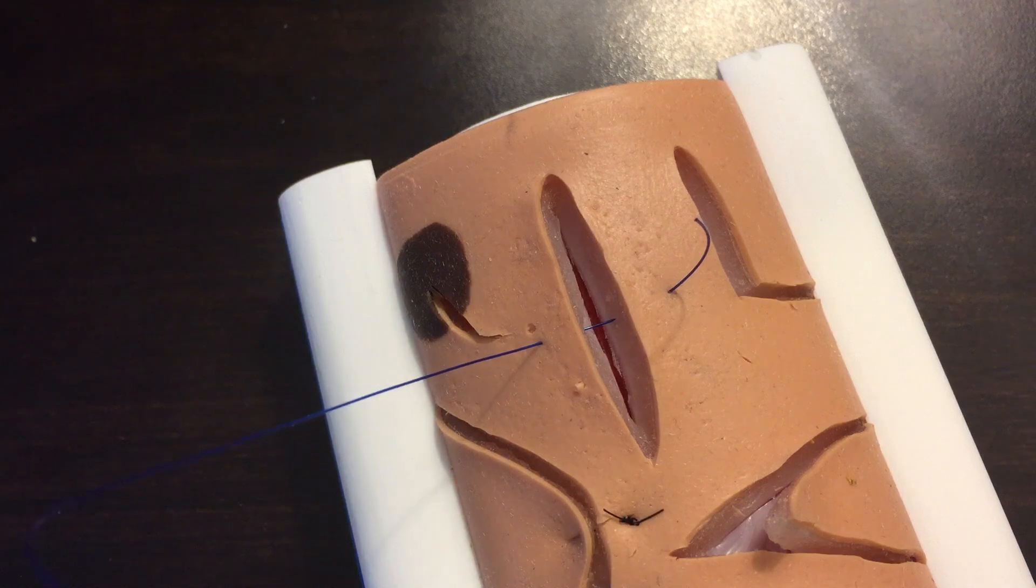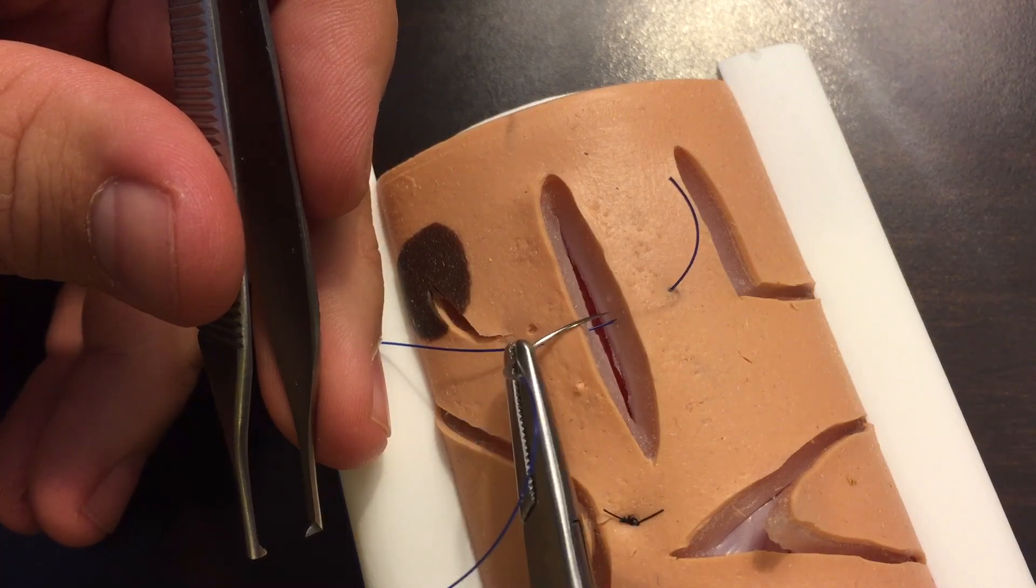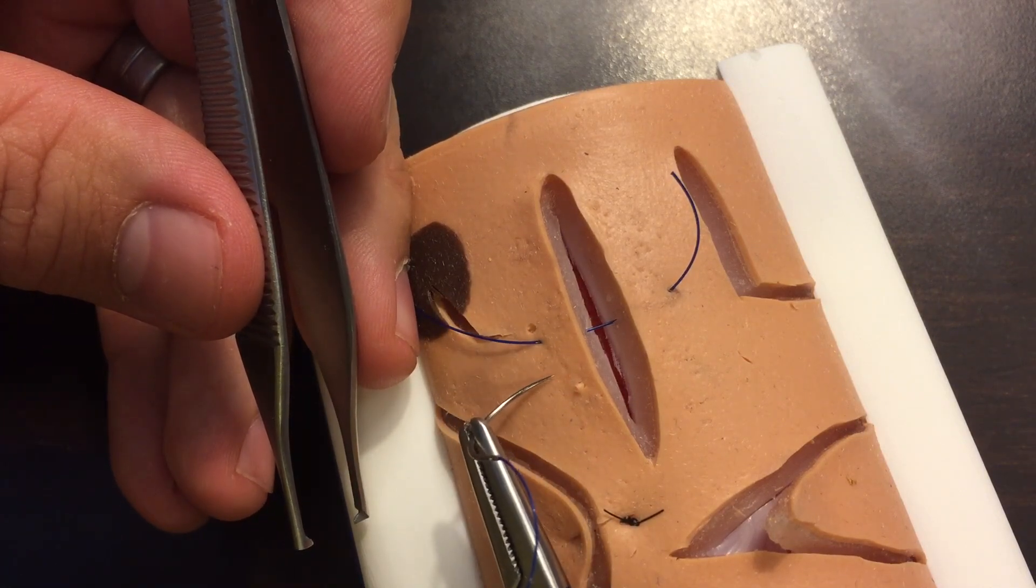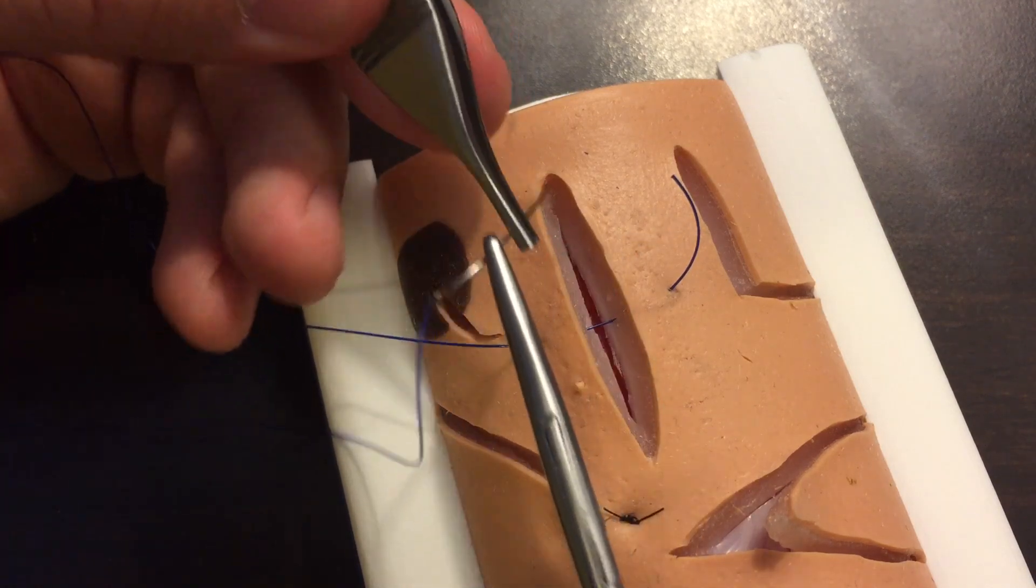Now with a vertical mattress suture, you're going to be entering at that same plane just much more superficial and much closer to the skin edge. But with a horizontal mattress, the difference is we're going to be coming back the other direction. You're going to load your needle backhanded like this.